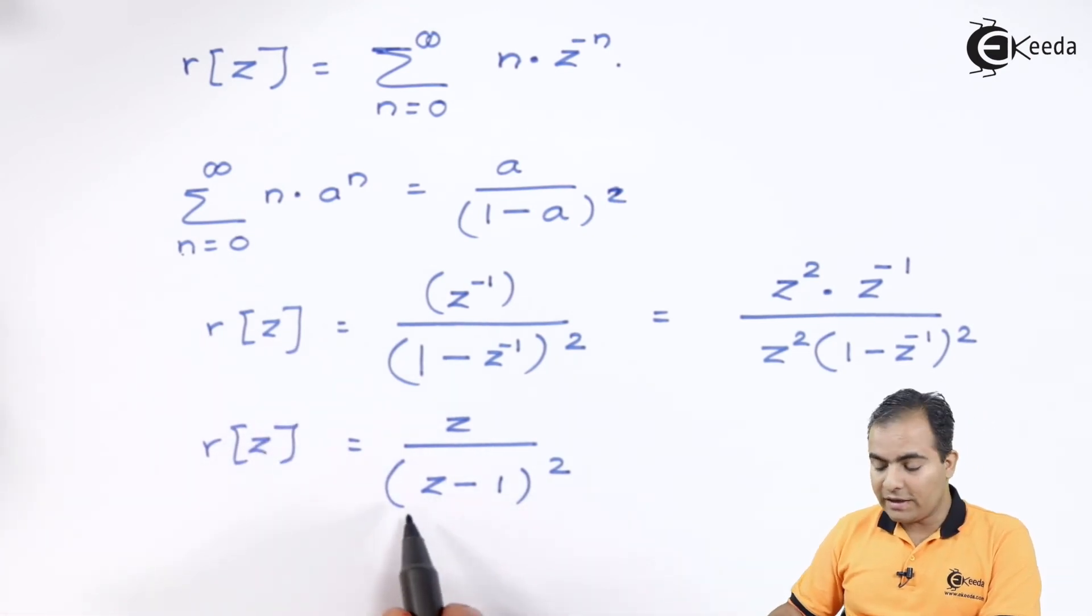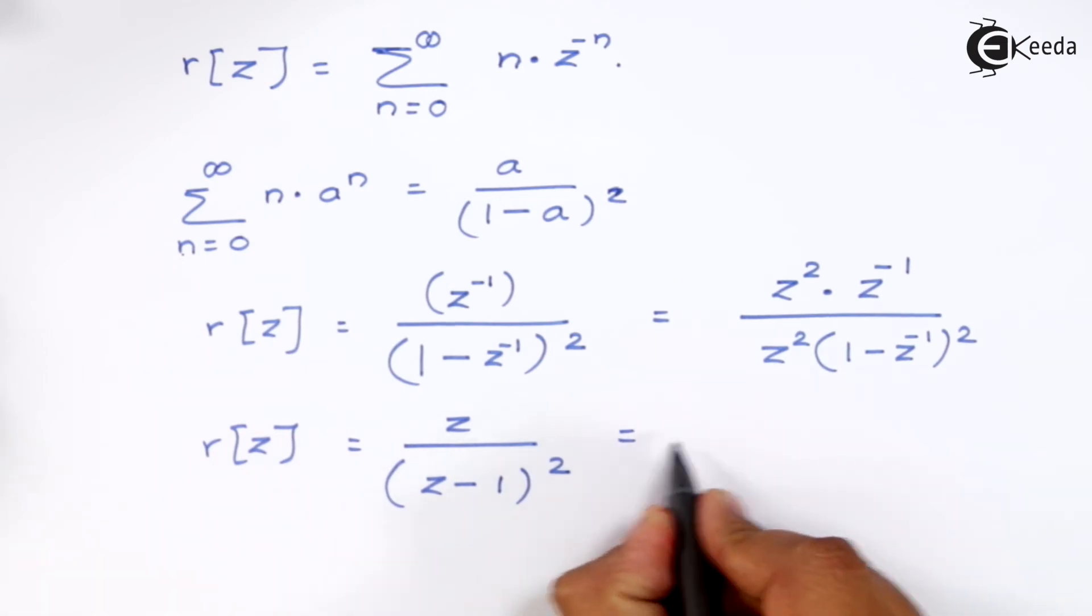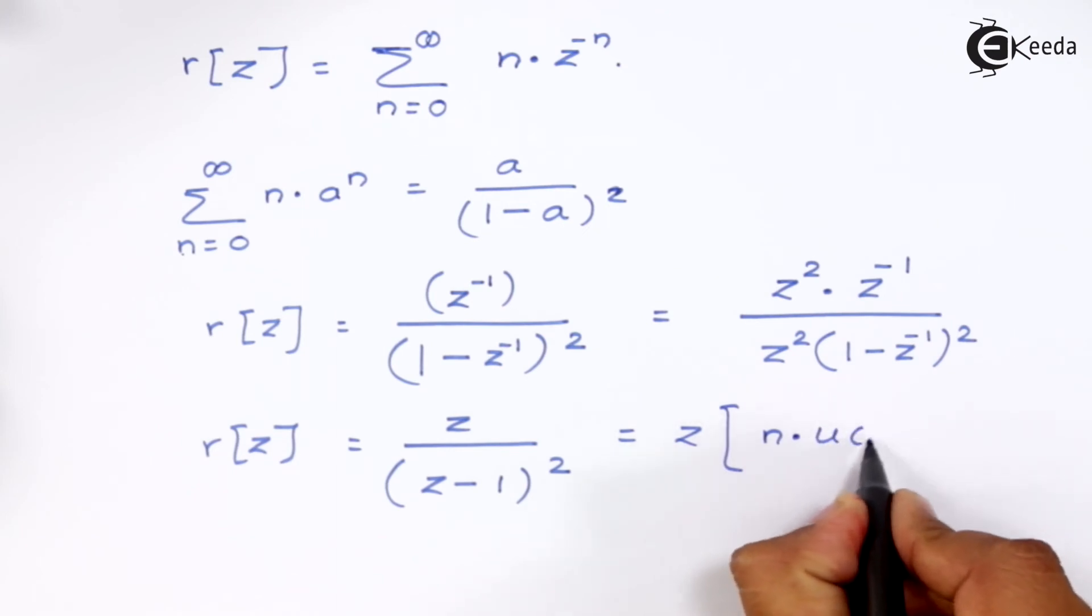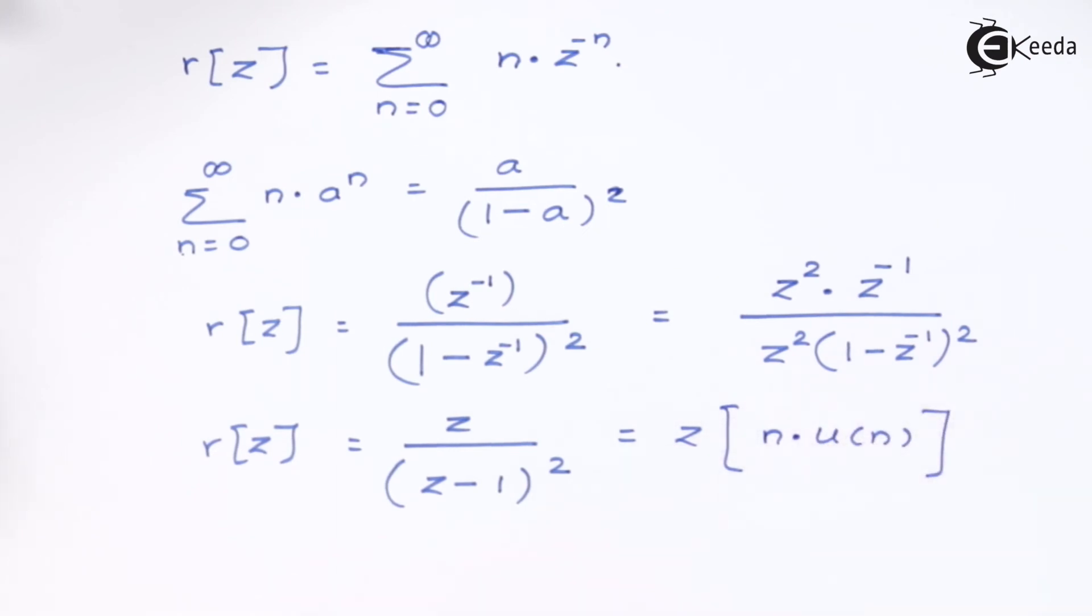And this is nothing but the z transform of R of z, or simply you can say that it is nothing but z transform of n into u of n. So, most of the time you require this formula whenever we have power 2 in the base of any term.